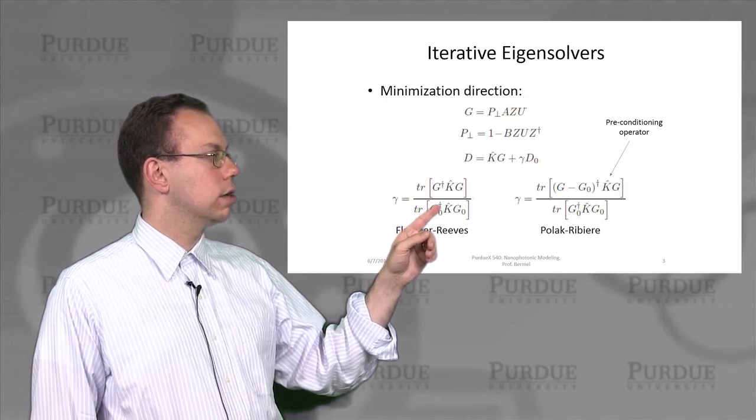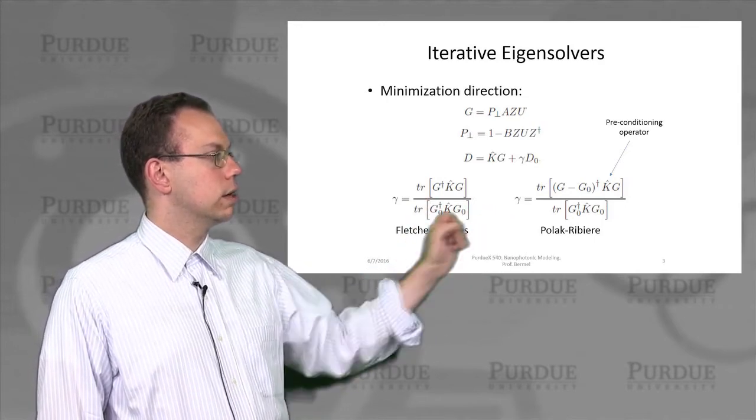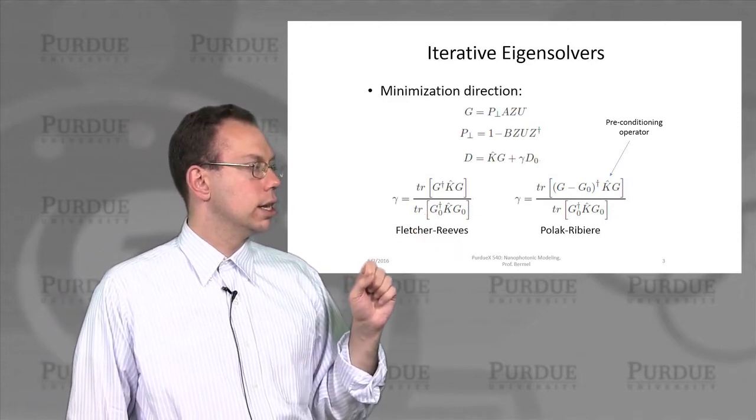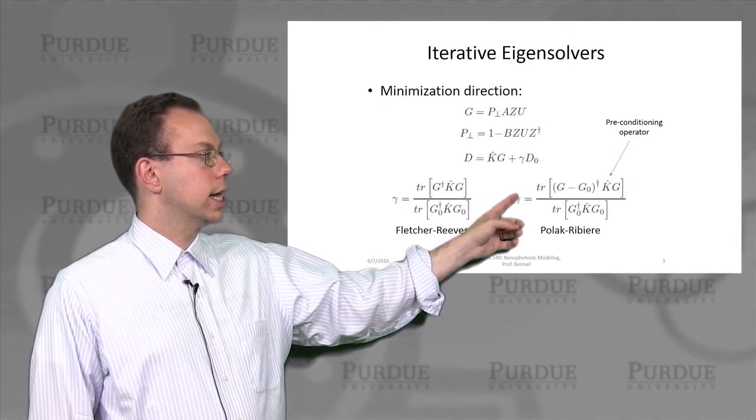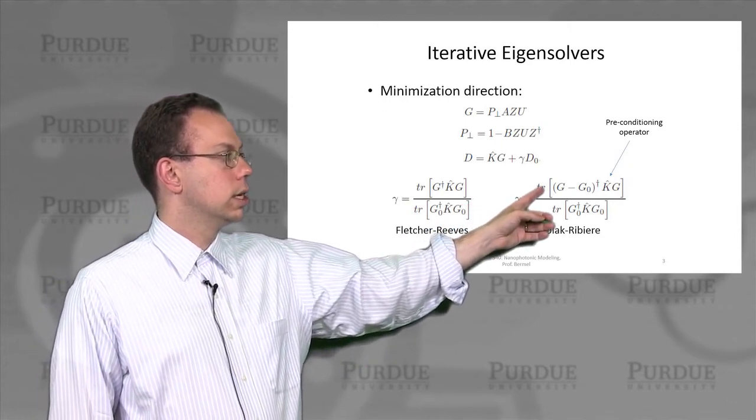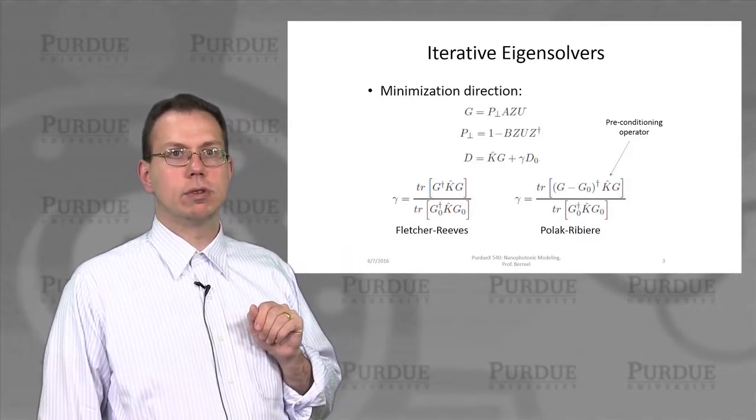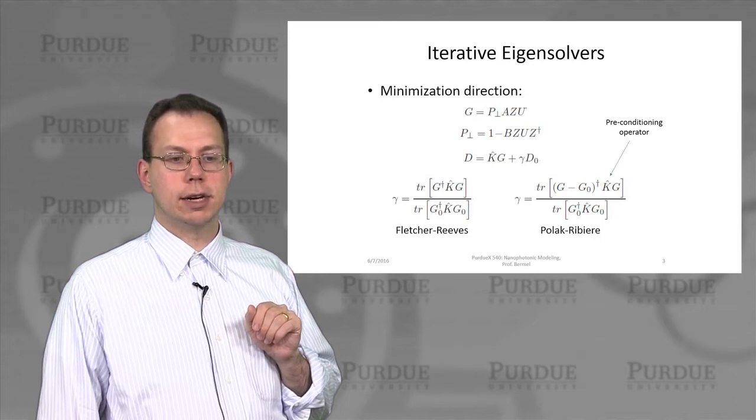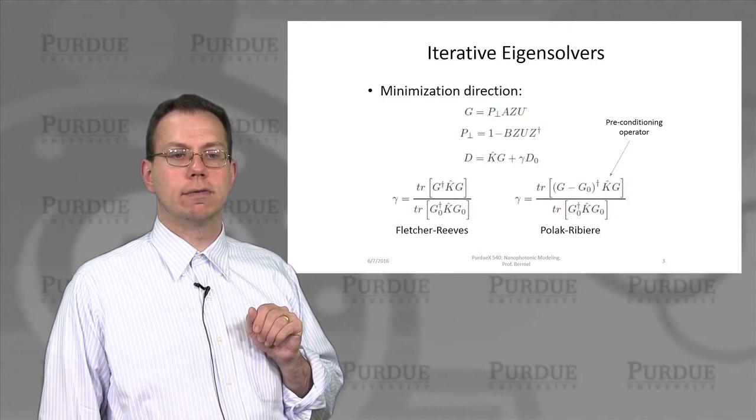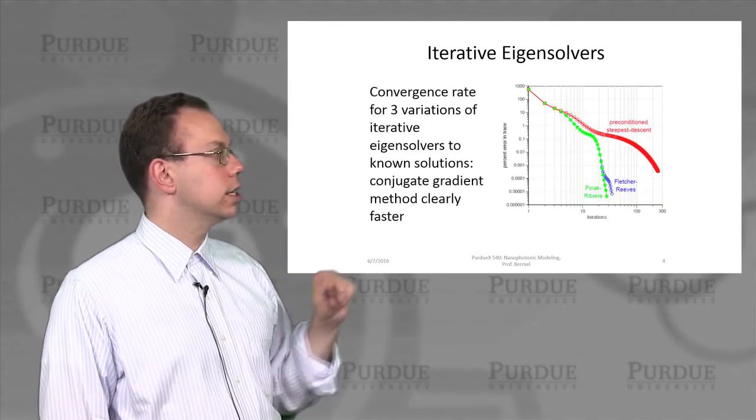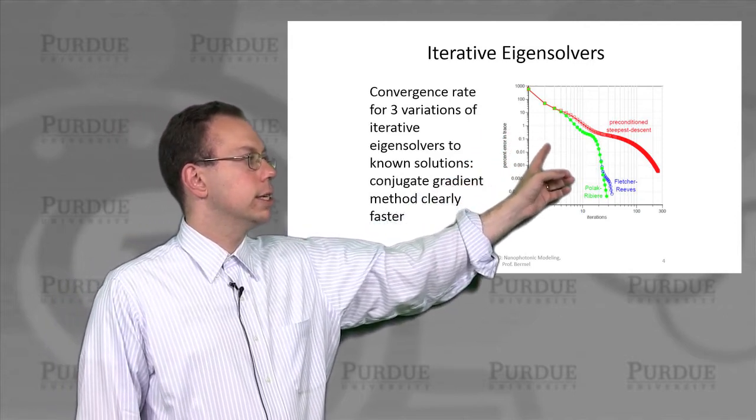On the left-hand side is the so-called Fletcher-Reeves formulation. And then we also have this so-called Pollack-Rabier method. And then in this case we have subtract this extra g-naught term. So these are actually very similar except for that one distinction. And both require what's called preconditioning which allows us to kind of provide initial guess for what kind of results we're going to get. And then this is showing what the results are for each of these three methods.